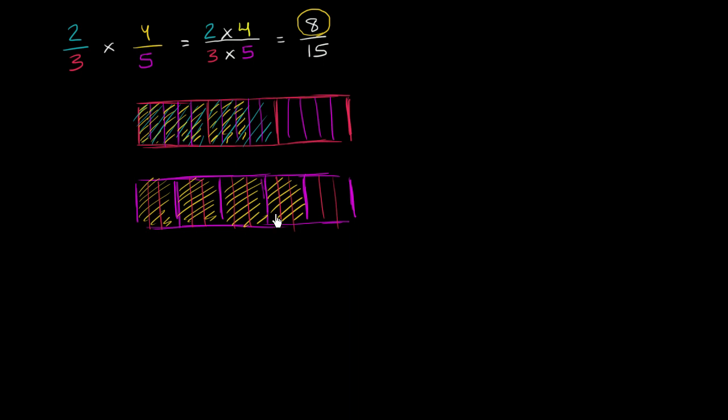And we want to take 2 thirds of this yellow area. We're not taking 2 thirds of the whole section. We're taking 2 thirds of the 4 fifths. So how many fifteenths do we have here? We have 1, 2, 3, 4, 5, 6, 7, 8, 9, 10, 11, 12. So if you have 12 of something and you want to take 2 thirds of that,